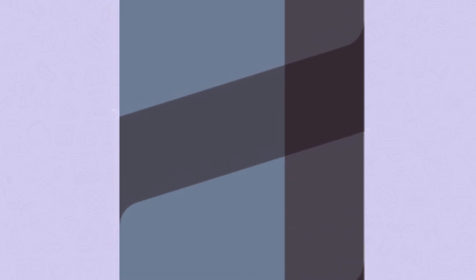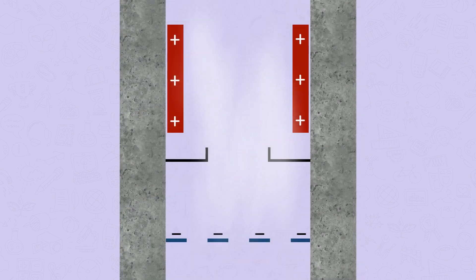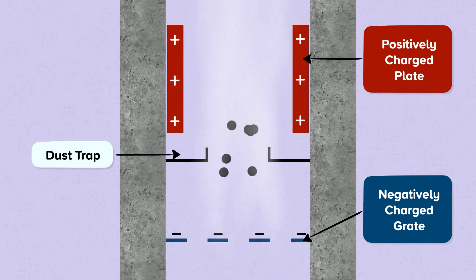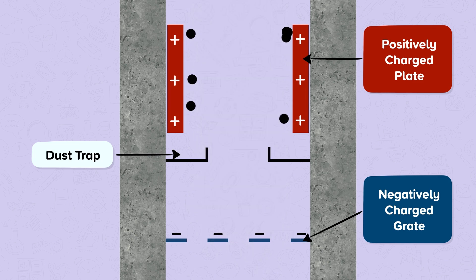Electrostatic precipitators are found inside some industrial chimneys. Inside the chimney, waste gases pass through the negatively charged grate and the smoke and dust particles are given a negative charge. The negatively charged smoke and dust particles are attracted towards the positively charged plates and are removed from the chimney gases.